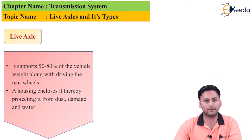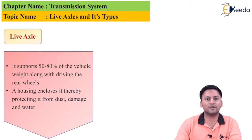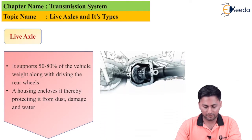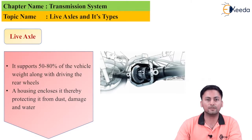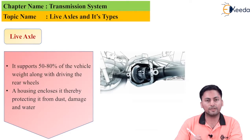A housing encloses the live axle, thereby protecting it from dust, damage, and water. The housing acts like a cover — by enclosing the axle we protect it. As you can see in this diagram, this is the actual visualization of a live axle, shown as a cut section with the entire assembly visible.